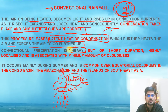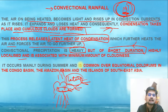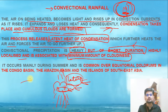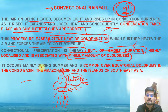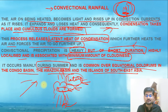Convectional precipitation is heavy in nature but of short duration — it is highly localized to a particular parcel of air or area, and is associated with a minimum amount of cloudiness. It occurs mainly during summer season and is common over equatorial doldrums: the Congo Basin, Amazon Basin, and islands of Southeast Asia. Largely, convectional rainfall is part of the equatorial zone — the torrid zone — which has the most convectional rainfall in the world.